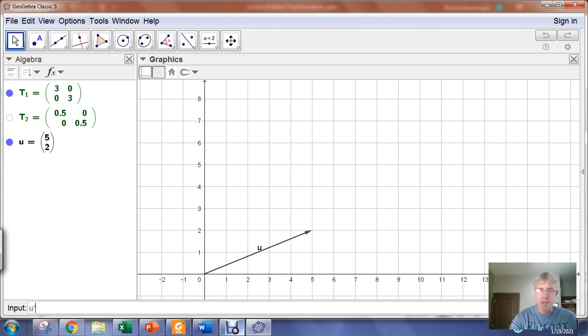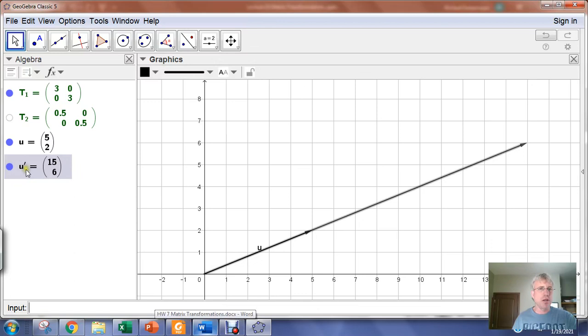So one way we could transform U would be to multiply it by T sub 1. The subscript here, you use the underscore to denote that. So I could go T sub 1 times U, and that will give me immediately a vector that's three times longer. And I denote that vector by U prime.